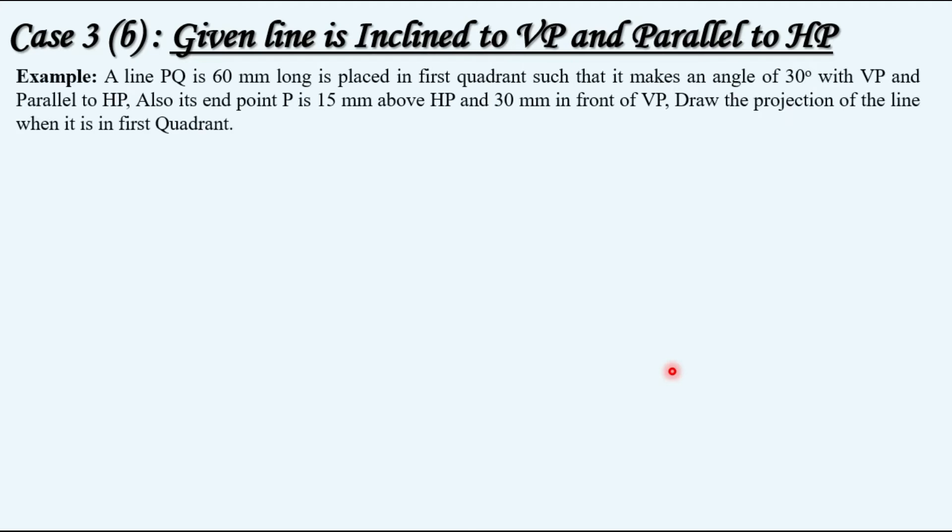Let us discuss sub-case B of Case 3, that is when the given line is inclined to VP and parallel to HP. Take an example for better understanding.